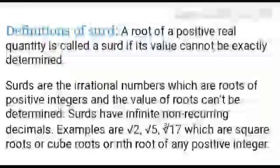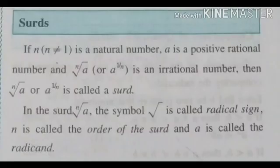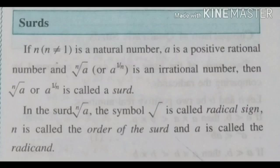Now children, let's learn the definition of surds. Surds are irrational numbers which are roots of positive integers and the value of the roots cannot be determined. From your 9th standard textbook: if n is a natural number, a is a positive rational number, and the nth root of a is an irrational number, then the nth root of a is called a surd.